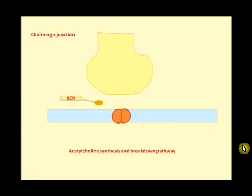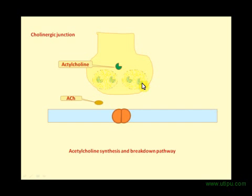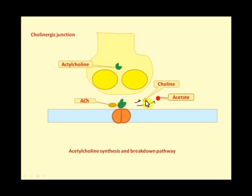This is the cholinergic junction. Acetylcholine is synthesized from acetate and choline by the enzyme choline acetyltransferase (CAT). It is then stored in vesicles. When a signal arrives, it is released, travels to its receptors, and is then broken down by acetylcholinesterase into choline and acetate. The choline is recycled back to form new acetylcholine.